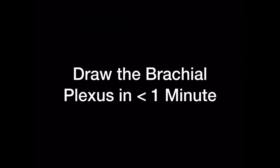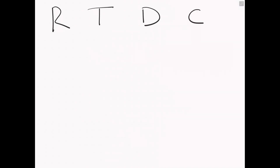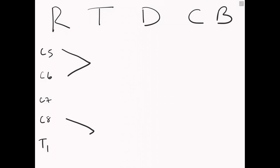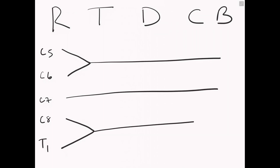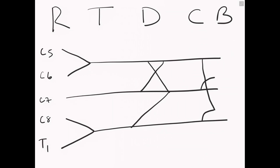We can then draw the brachial plexus — here's a video of how to do it. We label roots, trunks, divisions, cords and branches along the top of the paper, then C5 to T1 on the left-hand side. We then draw an arrow covering C5 and C6, and an arrow for C8 and T1 in line with the roots, then draw three lines to cover the rest of the paper. Under divisions we draw an X and then a spare — the strike is always higher than the spare. Under branches we draw a wave from the bottom line, a wave from the middle line, and then from the top we draw another wave that comes down from the top line to the first wave. We then add in some extra nerves.